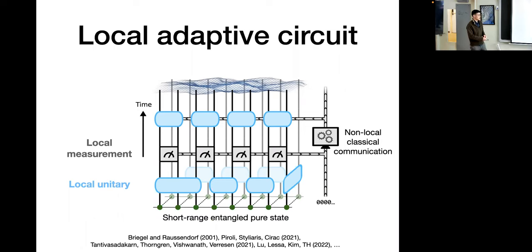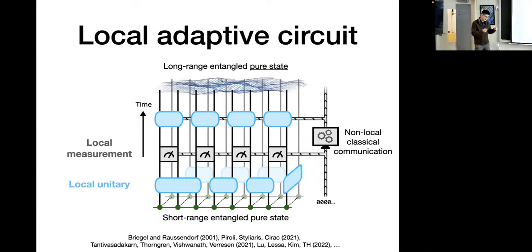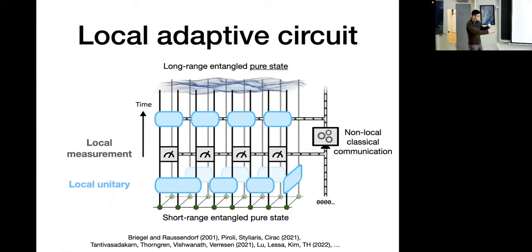In all these previous works, the groups started out with short-range entangled pure states, like a trivial product state, and arrived at long-range entangled pure states. However, this is pretty fine-tuned. In general, this local adaptive circuit will convert a pure state to a mixed state, and so we would like a more general formalism to describe this behavior.